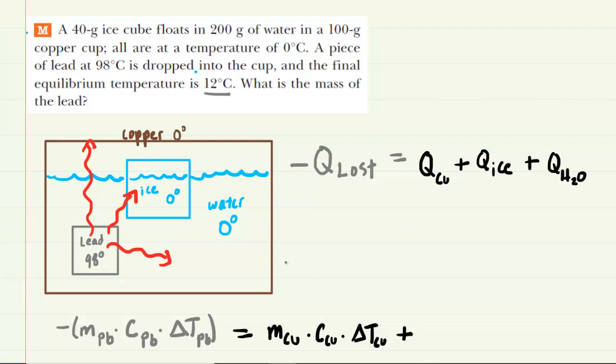Now, for the ice, this is where it gets a little bit tricky. Notice the ice is at 0 degrees Celsius, but then its temperature is going to rise all the way up to 12. And it turns out that that process will be broken up into two parts. The first part will be the melting of the ice. So the expression for melting looks a little bit different. We would have the mass of the ice multiplied by the latent heat of fusion.